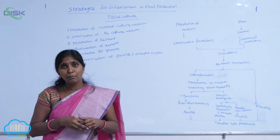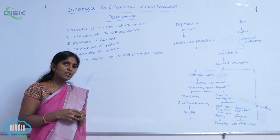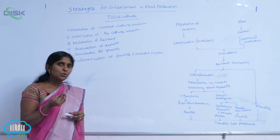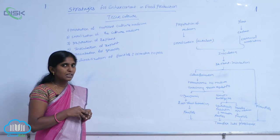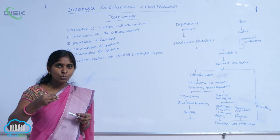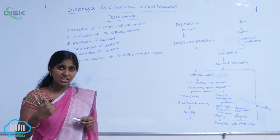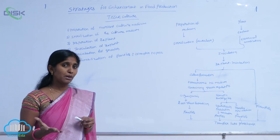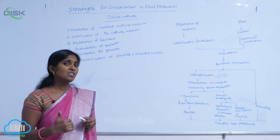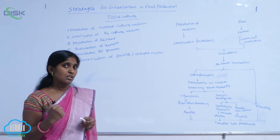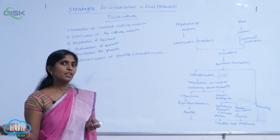Callus is nothing but an undifferentiated mass of cells. For callus production, the basic nutrient medium is sufficient. But the main objective of tissue culture is to regenerate the complete plant — it means differentiation of organs, i.e., organogenesis is carried out.